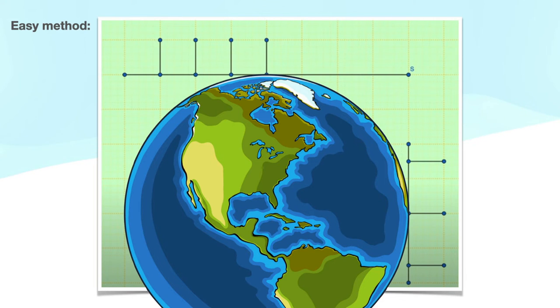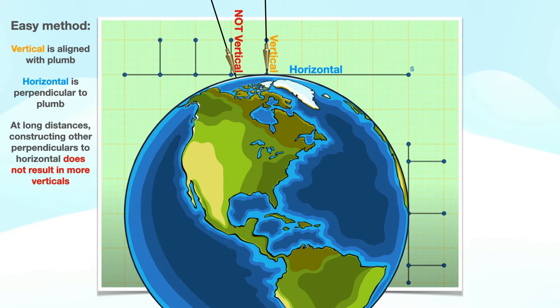So there's a very easy method to construct verticals and horizontals, and it always works. First, vertical is aligned with plumb; horizontal is perpendicular to plumb. At long distances, constructing other perpendiculars to this horizontal does not result in any more verticals. The reason is simple. In the real world, vertical is not defined in terms of horizontal, but rather in terms of plumb.